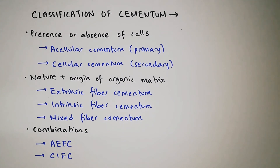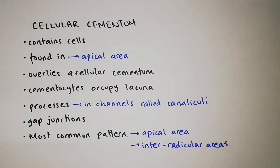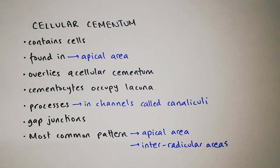Two types of combinations exist: acellular extrinsic fiber cementum and cellular intrinsic fiber cementum. Acellular cementum presents the most common pattern; it lies adjacent to dentine and is also called primary cementum. It is structureless and covers the root adjacent to dentine, while cellular cementum is found in the apical area. In acellular cementum, cementocytes are absent. Cellular cementum contains cells called cementocytes, and is found in the apical area where it overlies acellular cementum. The spaces cementocytes occupy are called lacunae, and the channels their processes extend along are canaliculi. Adjacent canaliculi are often connected and the processes within them exhibit gap junctions. Cellular cementum has the most common pattern in the apical and interradicular areas.